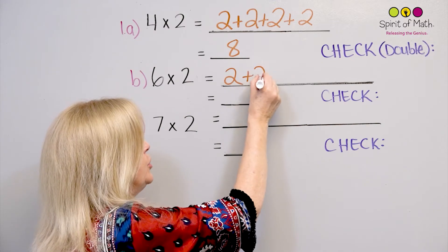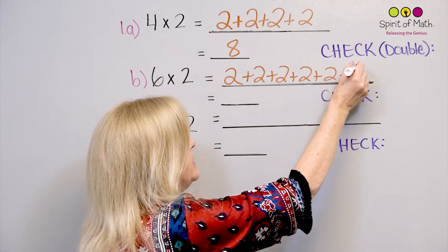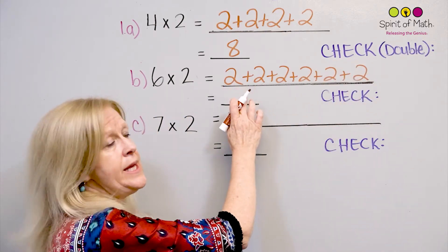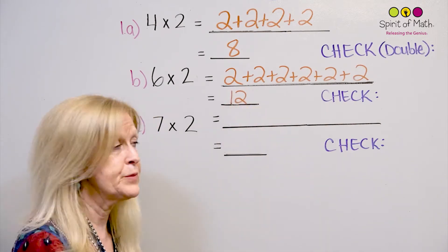So there's 1 group, 2, 3, 4, 5, and 6. So that makes 2, 4, 6, 8, 10, 12. So you've got 12. Okay.